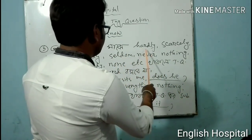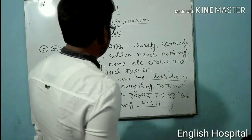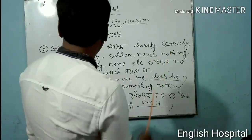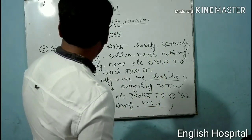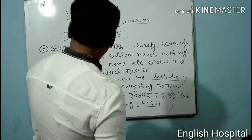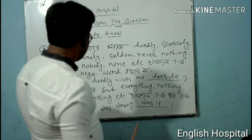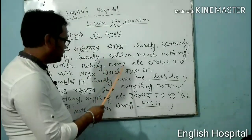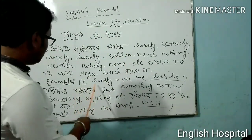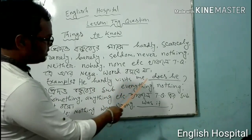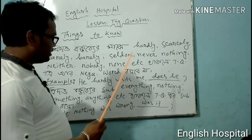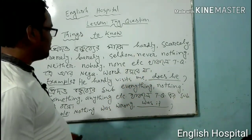The negative words are: hardly, scarcely, rarely, barely, seldom, never, nothing, neither, nobody, none. For example: 'He hardly visits me.' This is an example of a negative word in a statement.